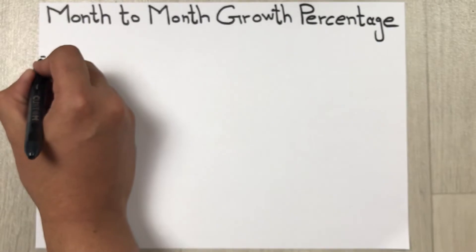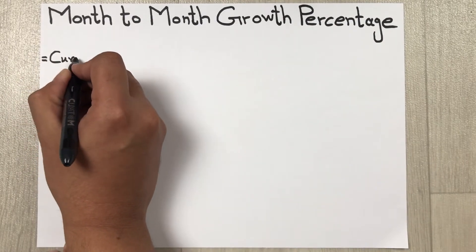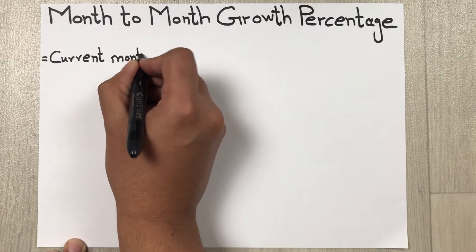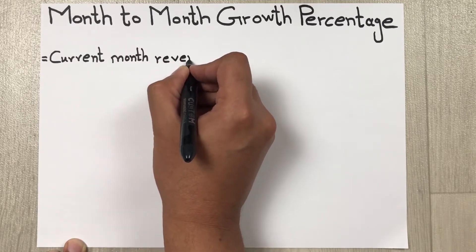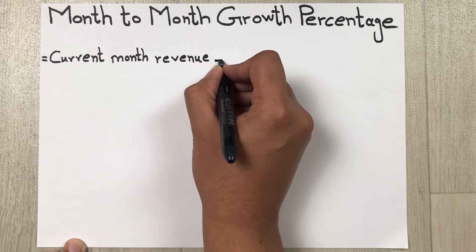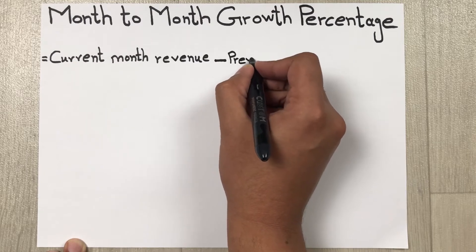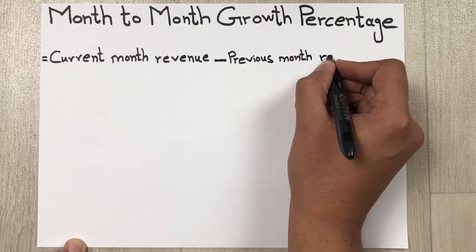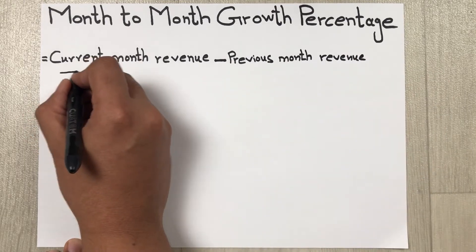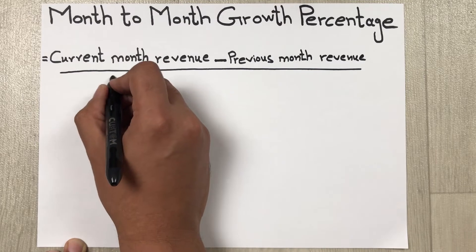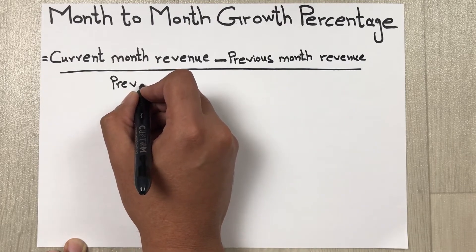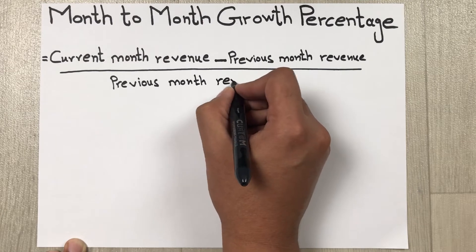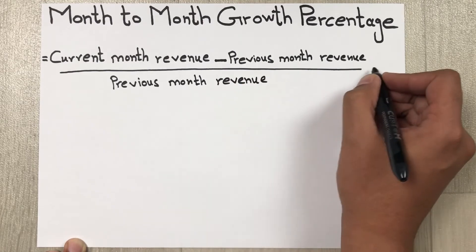Current month revenue minus previous month revenue, divided by previous month revenue, multiplied by 100.